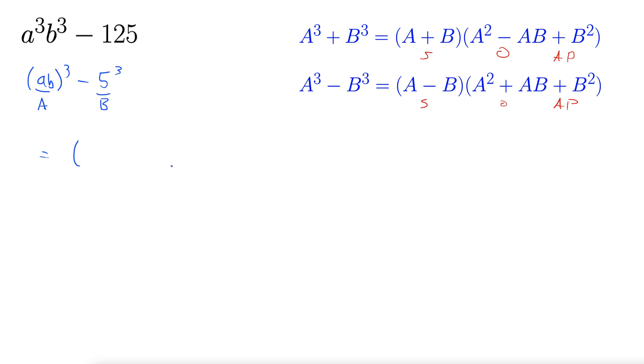So we can grab our formula. This is the minus one, so we'll do this bit here: A - B, so ab - 5.